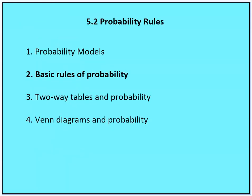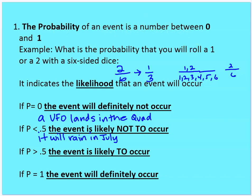Let's talk about the basic rules of probability, taking from the idea of the two dice. We define the probability of an event as a number between zero and one, inclusive. The probability indicates the likelihood that an event will occur. If the probability is zero, the event will definitely not occur — for example, a UFO lands in the quad. Probability less than 0.5 means the event is likely not to occur, like rain in July in the Bay Area. Probability greater than 0.5, like rain in January in the Bay Area. And probability equal to 1 means the event will definitely occur.